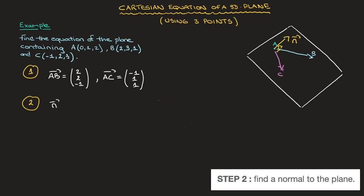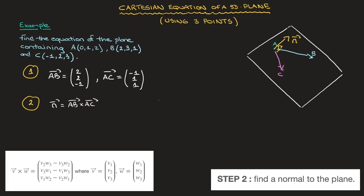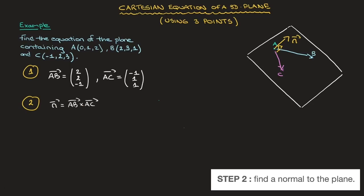We'll calculate the cross product of vectors AB and AC to define the normal vector that we'll call N. The normal vector N is equal to the cross product of vector AB and vector AC — you may also know this as the vector product. I like to use the determinant of a matrix method. This is equal to the determinant of the matrix whose top row is I, J, K — the unit base vectors — second row is the components of the first vector: 2, 2, negative 1, and the third row is the components of the second vector: negative 1, 1, 1.